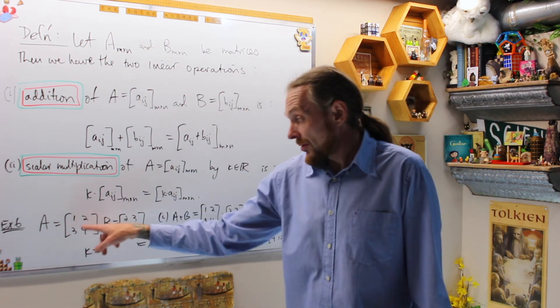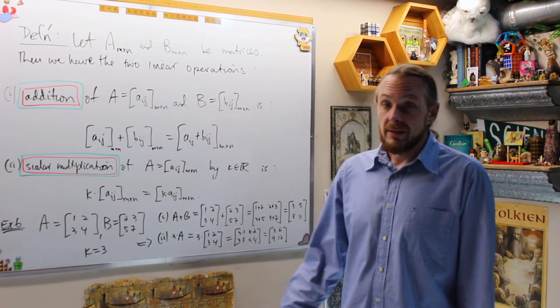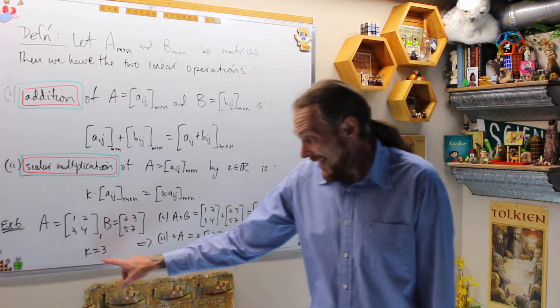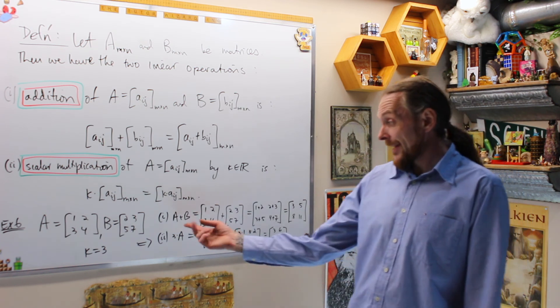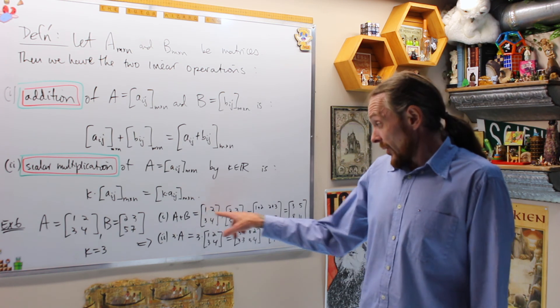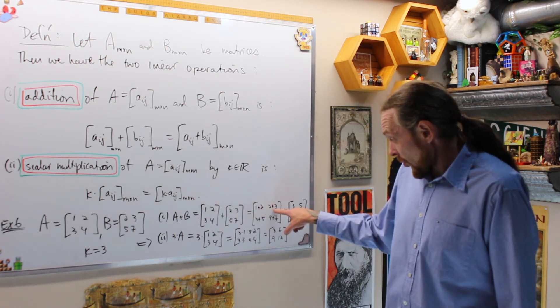Example 6, and then we're done. If A is [1, 2, 3, 4] and B is [2, 3, 5, 7], the first four positive integers and the first four prime numbers. And if K is 3, then adding A plus B is, they're the same size, so this is well posed, and we add these two matrices by doing the coordinates.